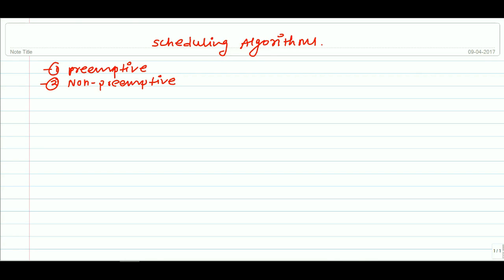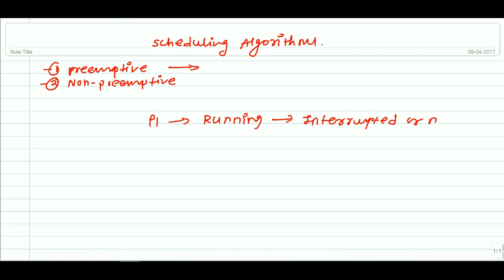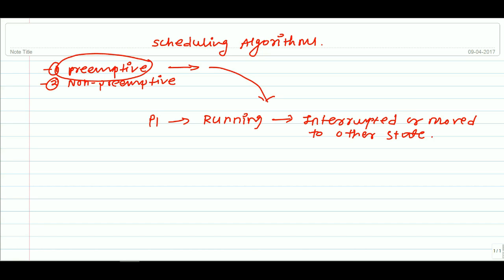In preemptive scheduling, the currently running process may be interrupted or moved to the ready queue by the operating system. For example, suppose there is a process P1 which is currently in the running state — this process can be interrupted or moved to a waiting state or blocked state. So we can interrupt a process during execution in preemptive scheduling.